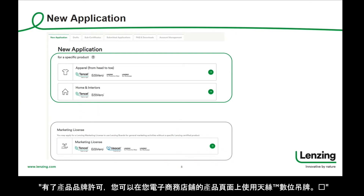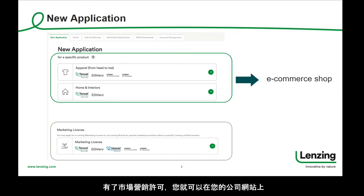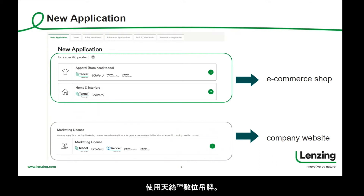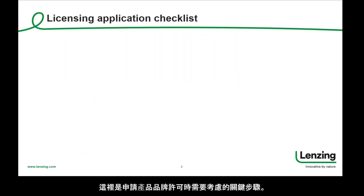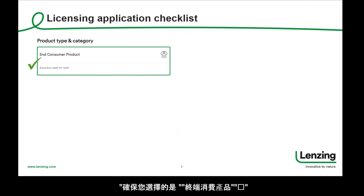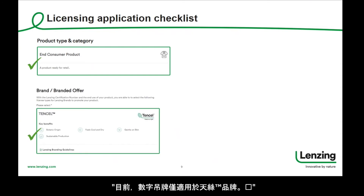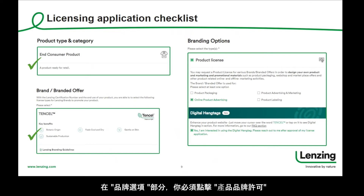With the product license, you can use the Tencel Digital Hangtag on your product pages in your e-commerce shop. With the marketing license, you are allowed to implement the Digital Hangtag on your general company website. Here are some key steps to consider during the product license application: make sure you select End-Consumer product. Currently, the Digital Hangtag is available for Tencel brand only. In the branding options section, you have to click on product license, select online product advertising, and then confirm that you are interested in using the Digital Hangtag.